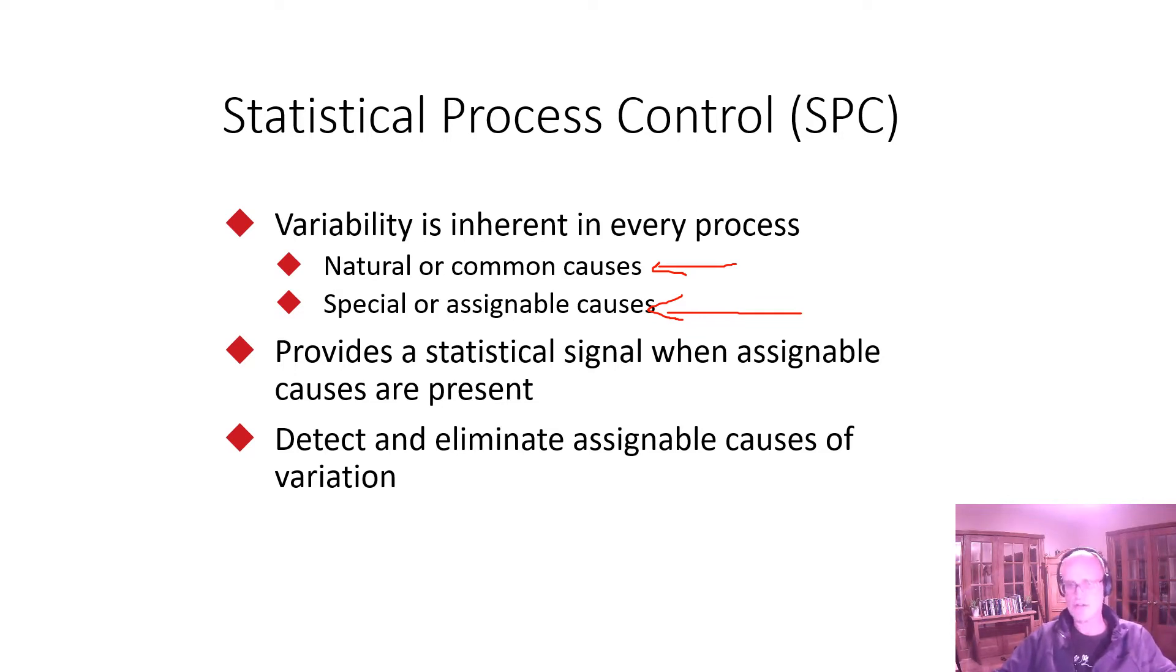It provides a signal when assignable causes are present and allows us to detect and eliminate assignable causes of variation. So what we want to do is get a warning when things are going wrong, and then we have to go back and say, why is that happening and what can we do about it?